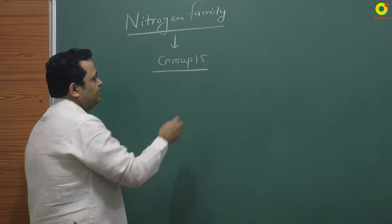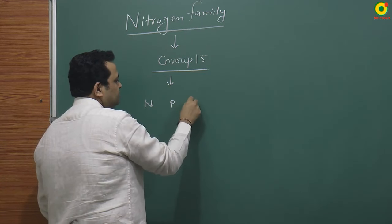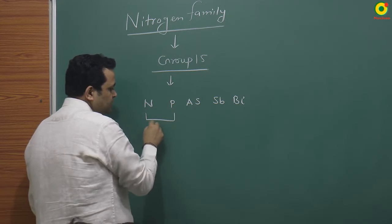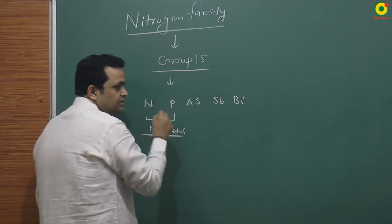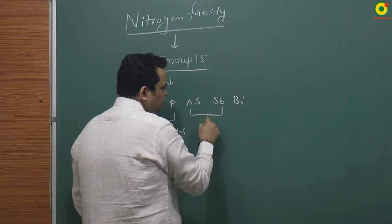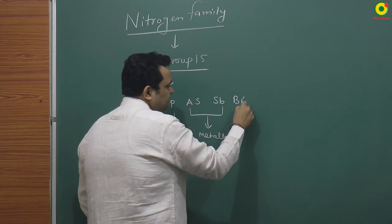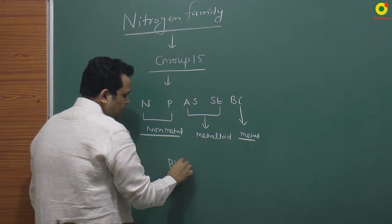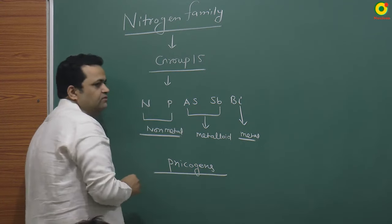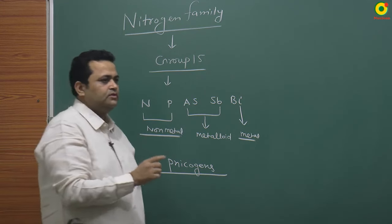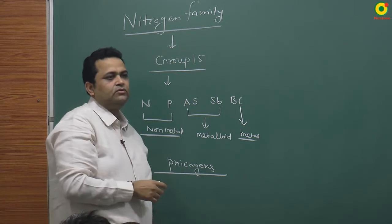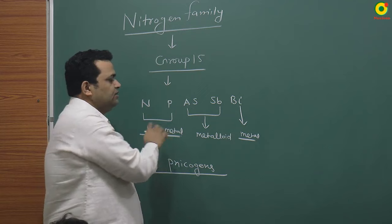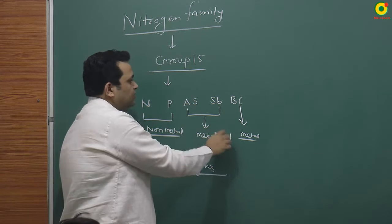Nitrogen family - Group 15 elements: nitrogen, phosphorus, arsenic, antimony, and bismuth. The first two elements are considered non-metals; arsenic and antimony are considered metalloids; and bismuth is considered a metal. The popular name for this group is 'pnictogens,' derived from a Greek word meaning 'suffocating.' So in Group 15, the first two elements are non-metals, then metalloids, then metal.